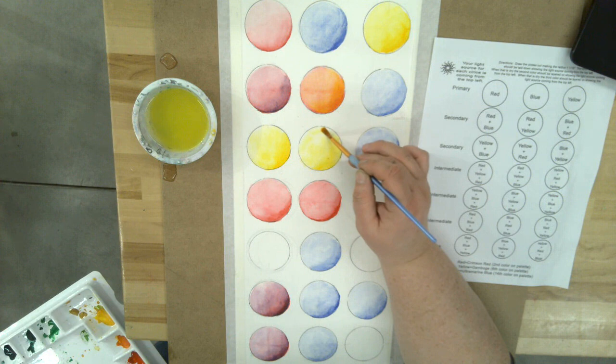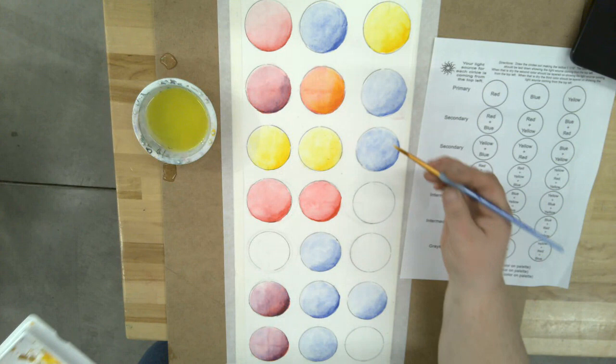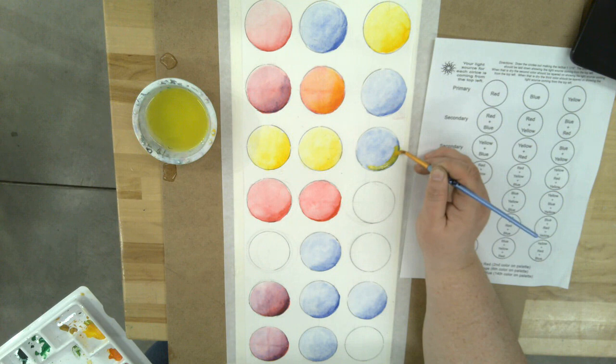This says blue plus yellow, so I'm gonna layer yellow over the top of the blue. We're gonna get like a greenish color here. Let's see what happens when blue is underneath and we glaze yellow over the top.